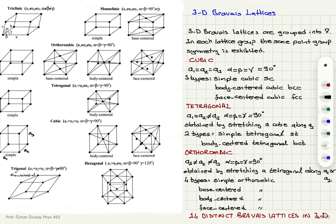In three dimensions we have 14 distinct Bravais lattices grouped into seven, with the same point group symmetry in each group. In cubic we have simple, body-centered, and face-centered. In tetragonal we have simple and body-centered. In orthorhombic we have simple, base-centered, body-centered, and face-centered.